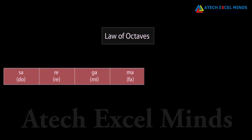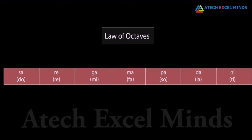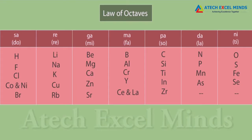In the Western system, the notation used is Do, Re, Mi, Fa, So, La, Ti. This is how the arrangement of Newlands' octaves looked. The properties of lithium and sodium were found to be the same — sodium is the eighth element after lithium. Similarly, beryllium and magnesium resemble each other.